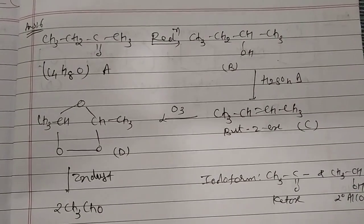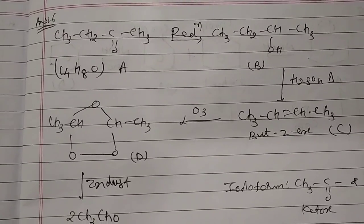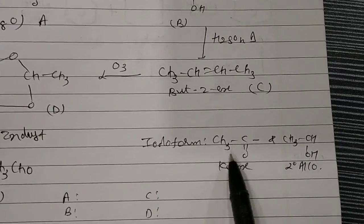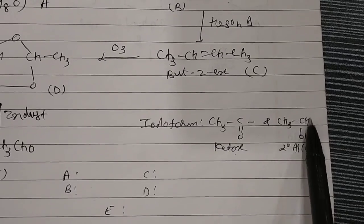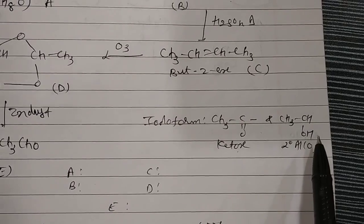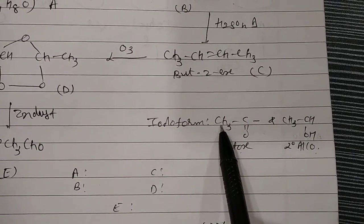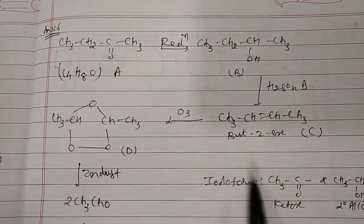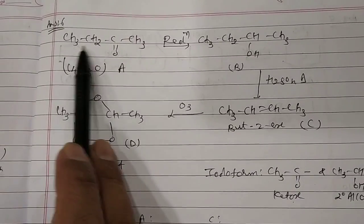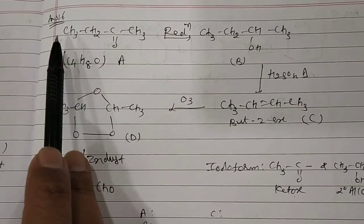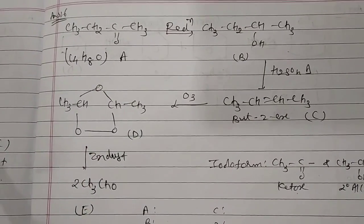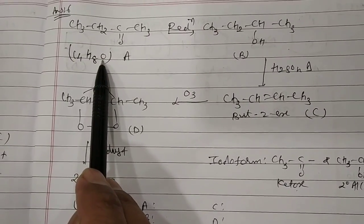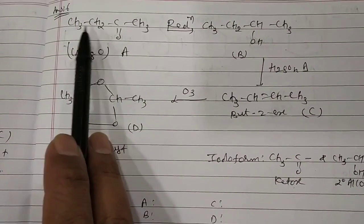First statement line says your component A is a ketone undergoing haloform reaction. Haloform reaction is given by two species: CH3CO ketone and CH3CHOH secondary alcohol. But clearly A is ketone, so functional group is CH3CO. Now molecular formula is C4H8O. Subtract CH3CO, your side chain is C2H5. So your A component is CH3CH2COCH3.